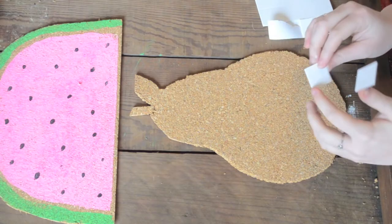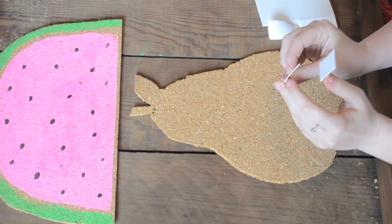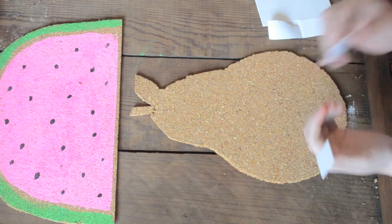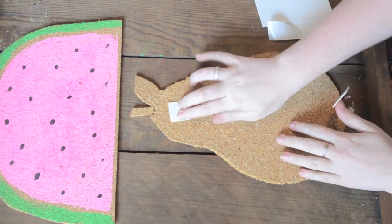Lastly, I'm taking these double-sided squares that came with the cork boards to put on the back to hang them on the wall nice and easy, so I don't have to punch any holes in the wall with any nails or pins.